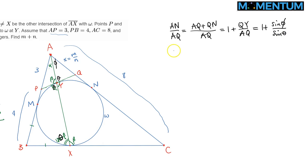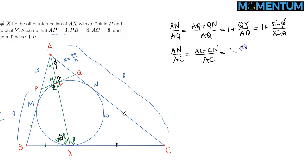Similarly, AN over AC: AN can be expressed as AC minus CN, so this equals 1 minus CN over AC. But CN equals CX by equal tangents. Applying the law of sines on triangle AXC: CX is opposite angle phi, and AC is opposite angle beta, which is 180 minus theta, so sine of that is sine theta. This gives 1 minus sine phi over sine theta.